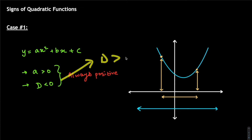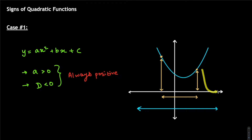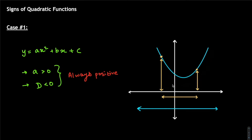Whenever a is greater than zero, it's an upward-facing parabola. The determinant tells us how many roots there are. If the determinant is greater than zero, we have two roots — two x-intercepts. If the determinant equals zero, the parabola touches the x-axis at exactly one point. If it's less than zero, the parabola won't touch the x-axis at all — there are no real roots.